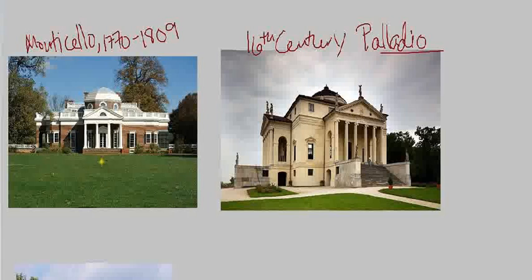That classical temple front is imitated at Monticello. There's also a prominent dome at the top, which Thomas Jefferson copies here. So he's very interested in classical architecture — the revival of classical architecture. But it's seen through the lens of this Renaissance architect who wrote treatises about classical architecture, so it's a revival of classical architecture through someone who had earlier sought to revive it. It's a really interesting thing going on there.